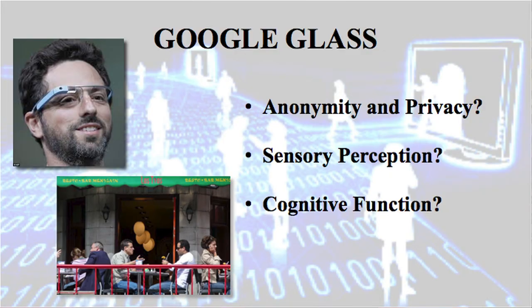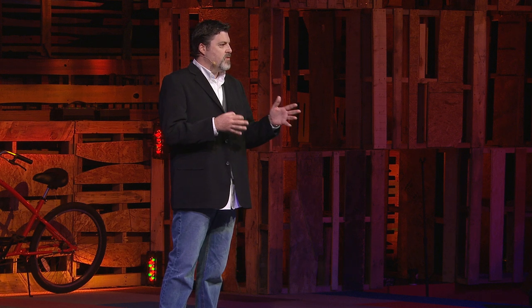Let's begin with looking at Google Glass. Just last week Google announced that Google Glass will be available to everybody next year, and I think this raises fundamental questions about anonymity and privacy. You can imagine, if not today, certainly very soon in the future, where Google Glass could interface with Google's face recognition software and image recognition software.